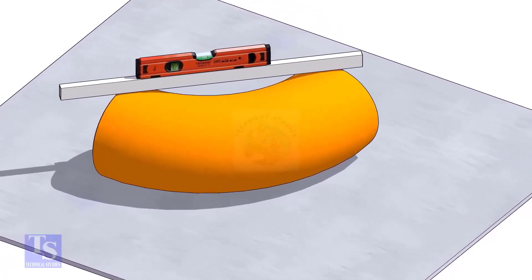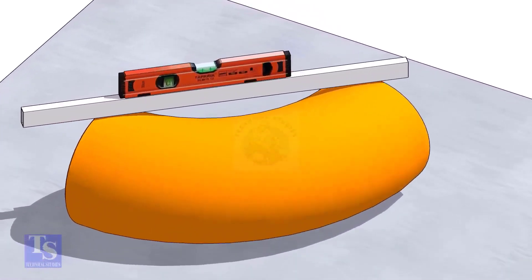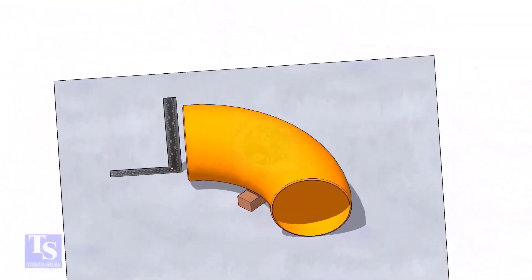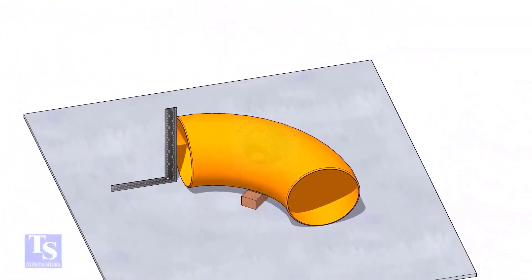Check the level of the elbow. Check the squareness of the face of the elbow with the plate. If necessary, put some packing below as shown.